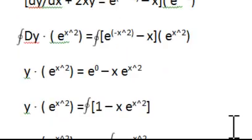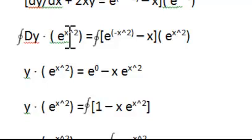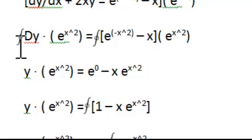Then multiply e raised to x squared through the equation. By the product rule, we would have d/dx of y times e raised to x squared, which is equal to e raised to negative x squared times e raised to x squared. Then integrating the left side we would have y times e raised to x squared.